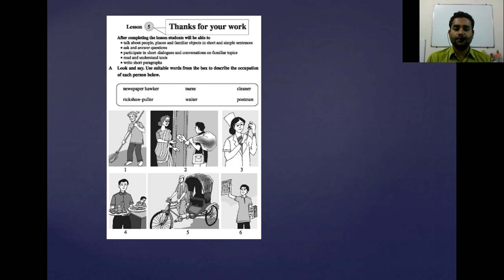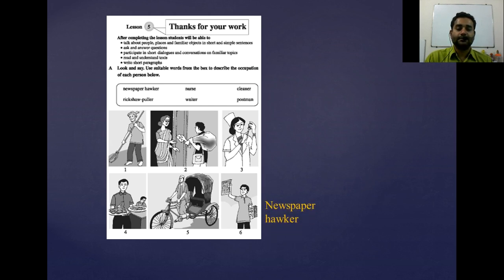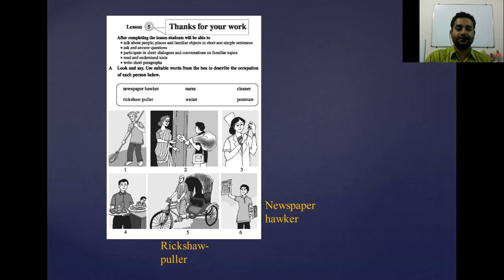So we will find or match the words to which character they belong. The first word is newspaper hawker. So which picture is this? The next one is rickshaw puller — we know very well. This is picture number 5; it is the rickshaw puller.